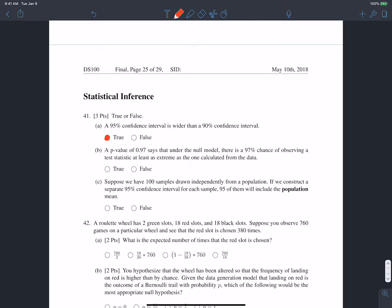OK, B, a p-value of 0.97 says that under the null model, there is a 97% chance of observing a test statistic at least as extreme as the one calculated from the data. That's also true.